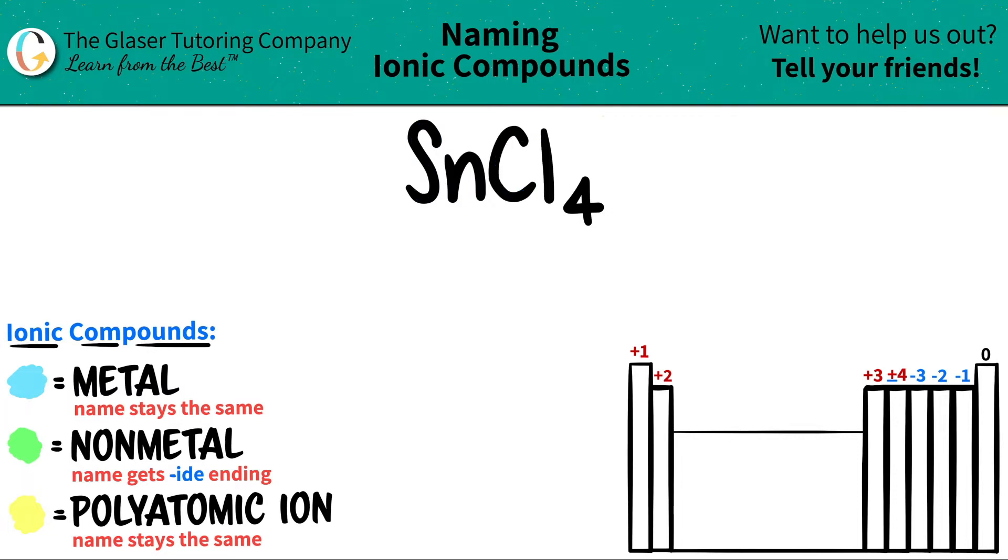So with only two elements, one should be a metal and one should be a nonmetal if we're doing ionic compounds. Let's just map them out where they are on the periodic table. Now, tin, which is Sn, is all the way down here somewhere, right?